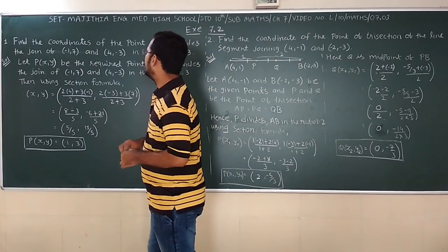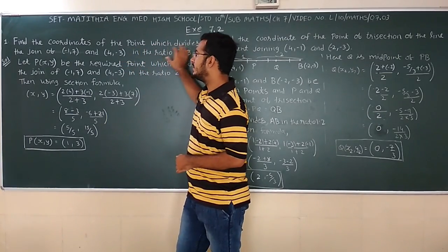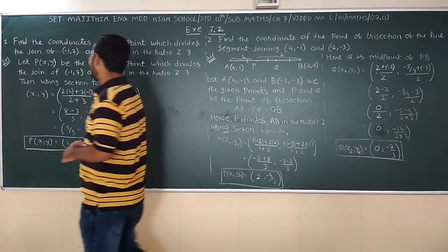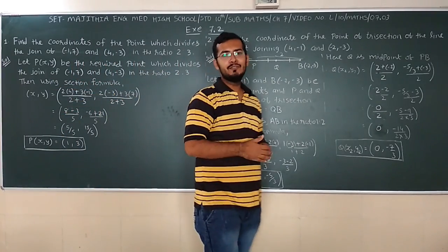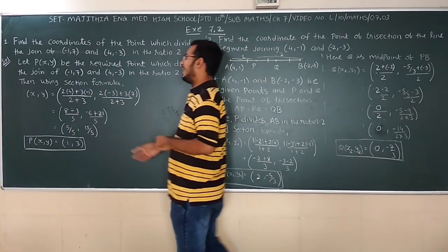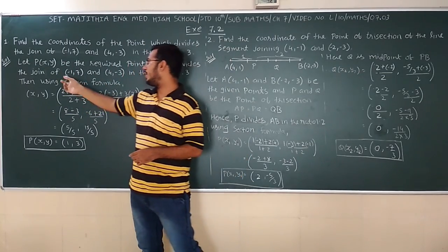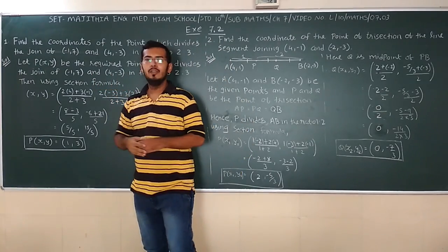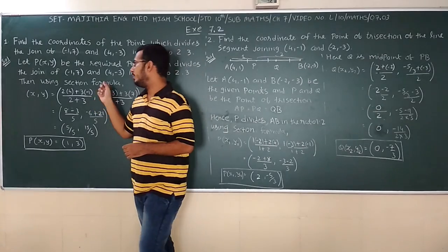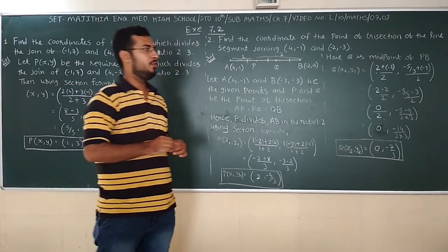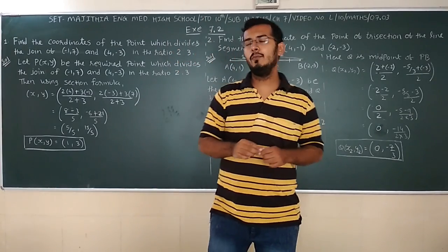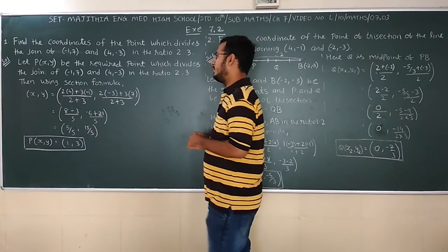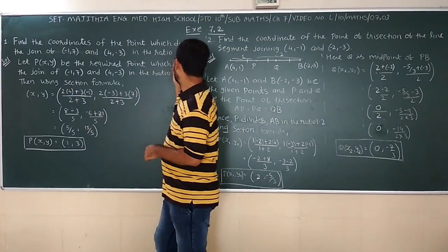First one, find the coordinates of the point which divides the join (-1,7) and (4,-3) in the ratio of 2:3. So we are using the section formula. The section formula is the required coordinates is equal to M2X1 plus M1X2 by M1 plus M2, M2Y1 plus M1Y2 upon M1 plus M2.